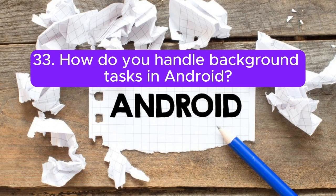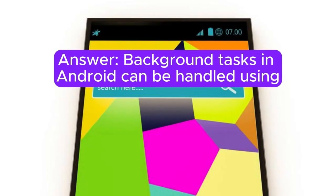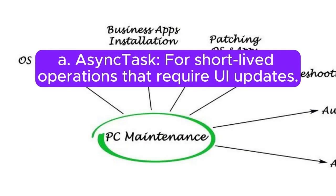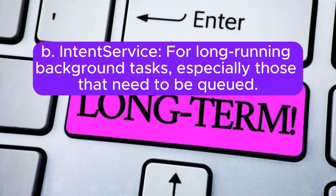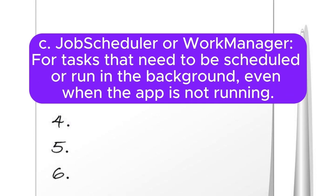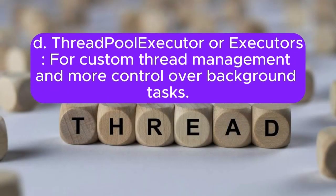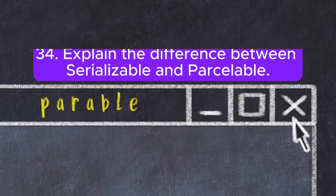Question 33: How do you handle background tasks in Android? Background tasks can be handled using: AsyncTask for short-lived operations that require UI updates; IntentService for long-running background tasks, especially those that need to be queued; JobScheduler or WorkManager for tasks that need to be scheduled or run in the background even when the app is not running; and ThreadPoolExecutor or Executors for custom thread management and more control over background tasks.